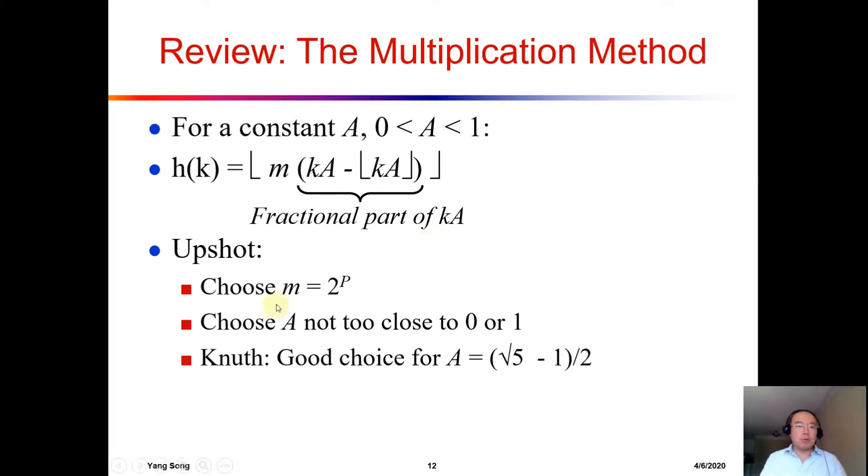Usually, if you want to choose M to be 2 to the power of something, then we choose an A not too close to 1 or 0. In one of the research papers, this person suggests that the square root of 5 minus 1, divided by 2, is a good value of A.